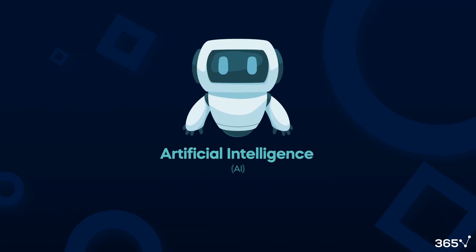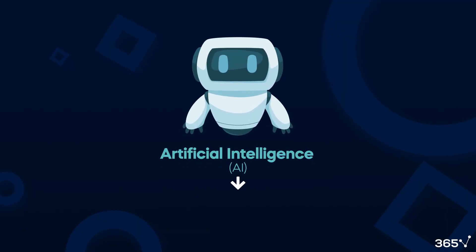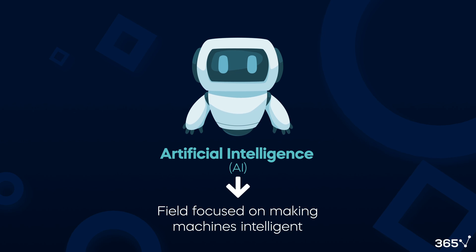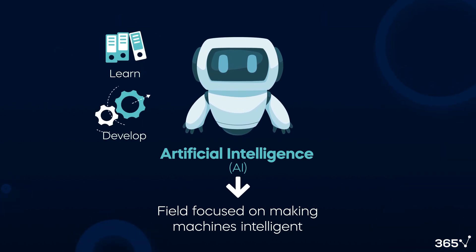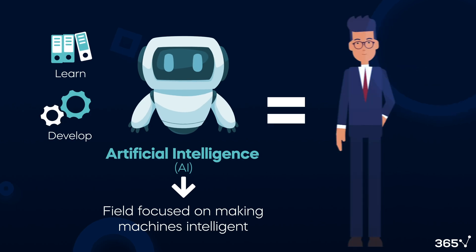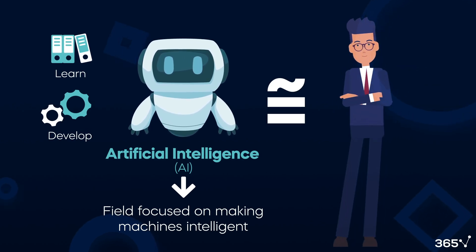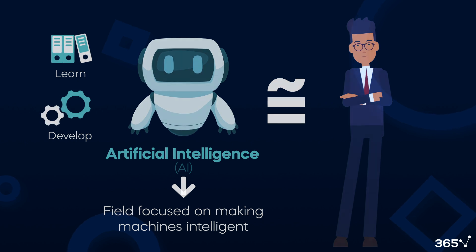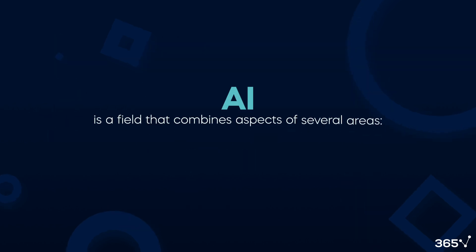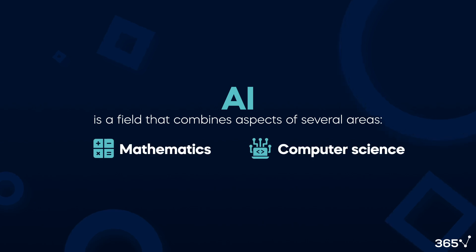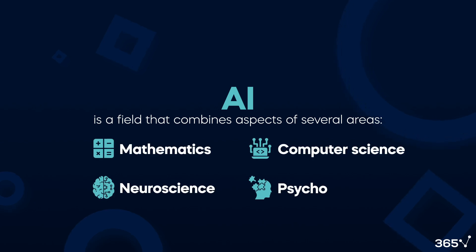Artificial Intelligence, or AI, is a field focused on making machines intelligent, allowing them to learn and develop new skills just like humans. It's not exactly the same, but it's highly inspired by the way we do it. AI is a field that combines aspects of several areas, such as mathematics, computer science, and psychology.